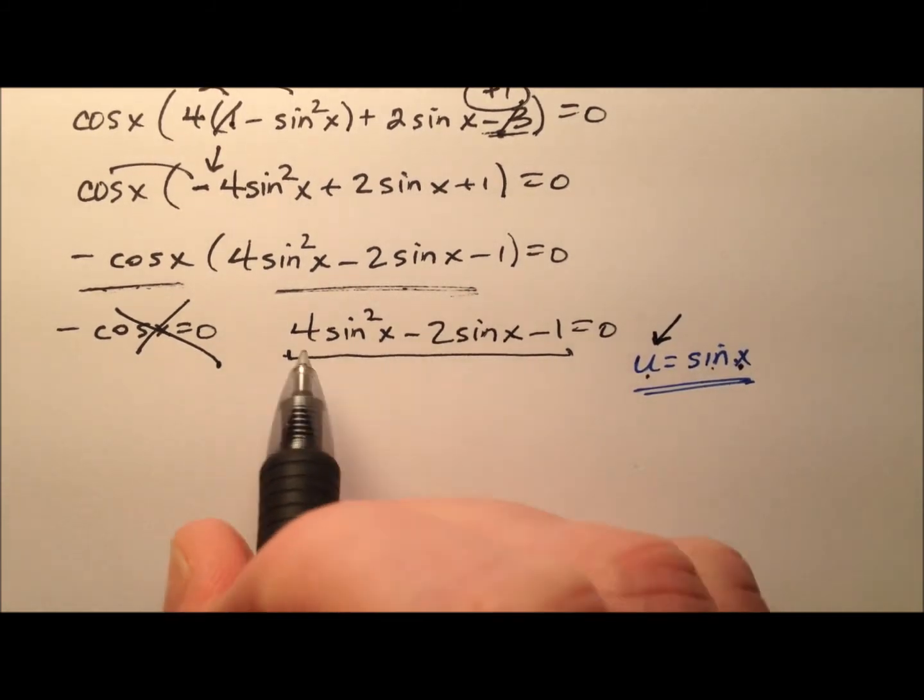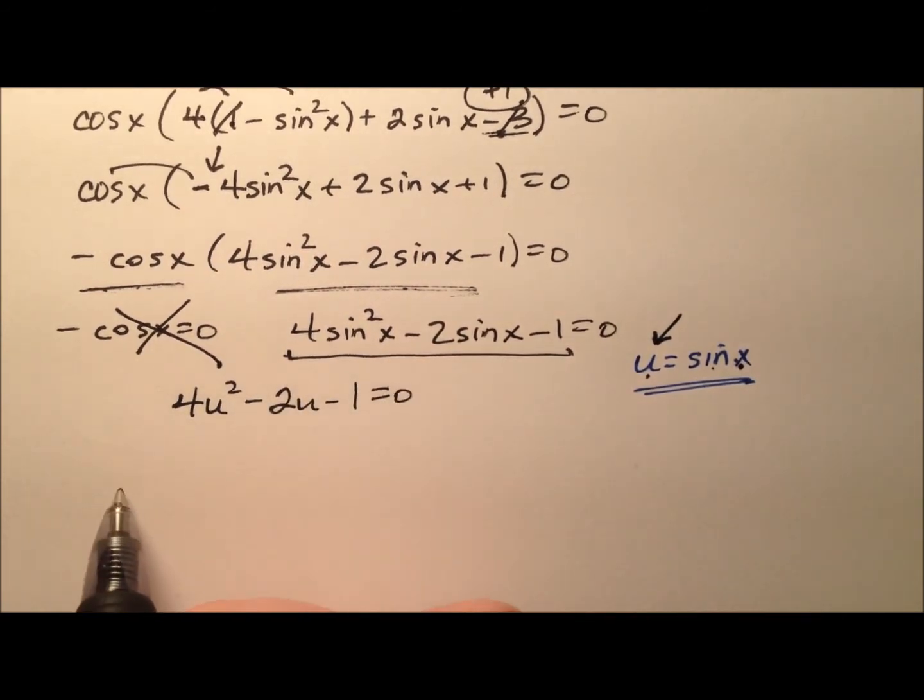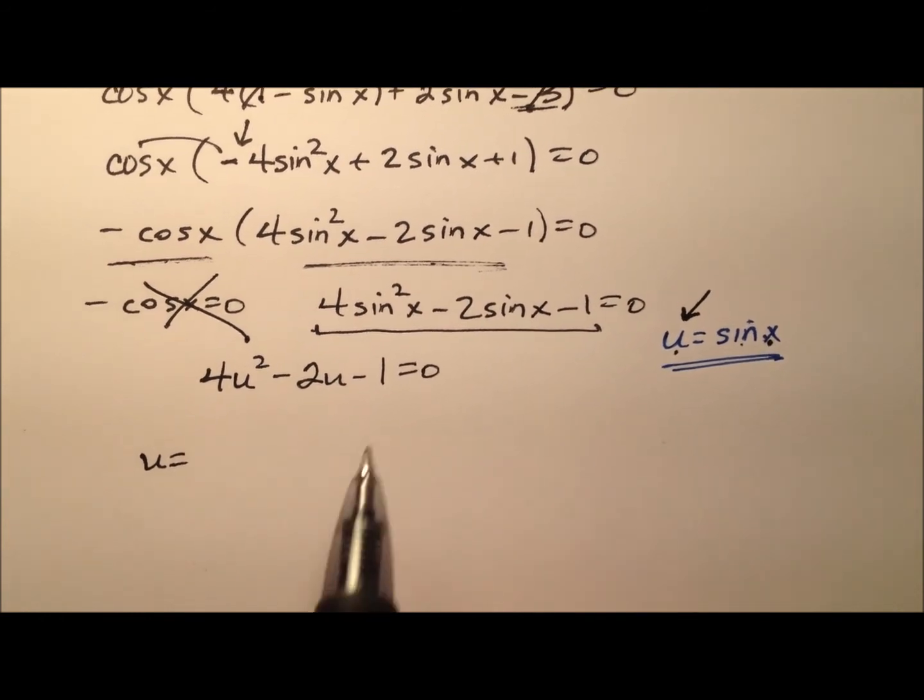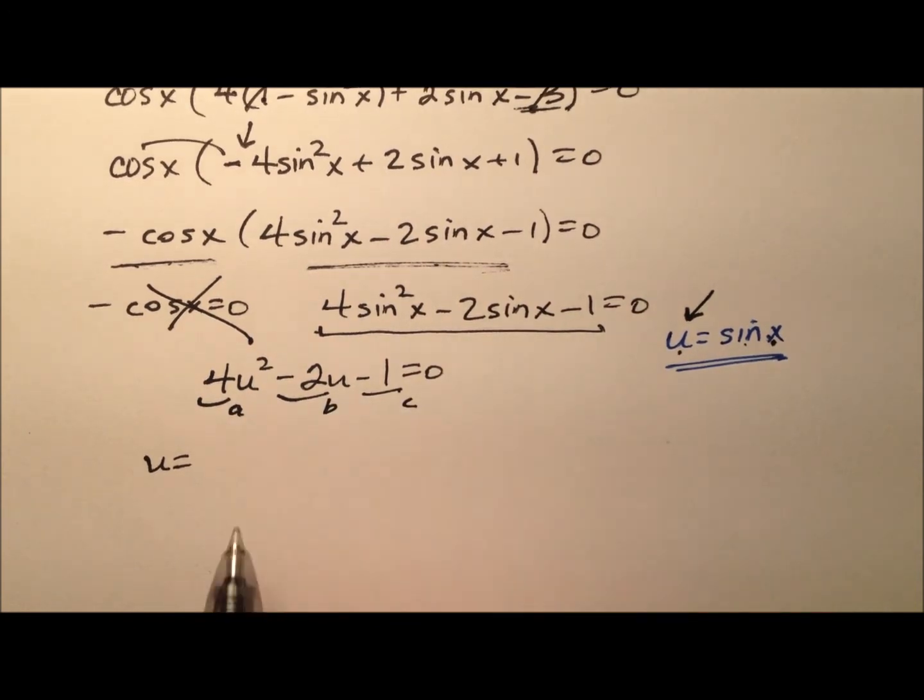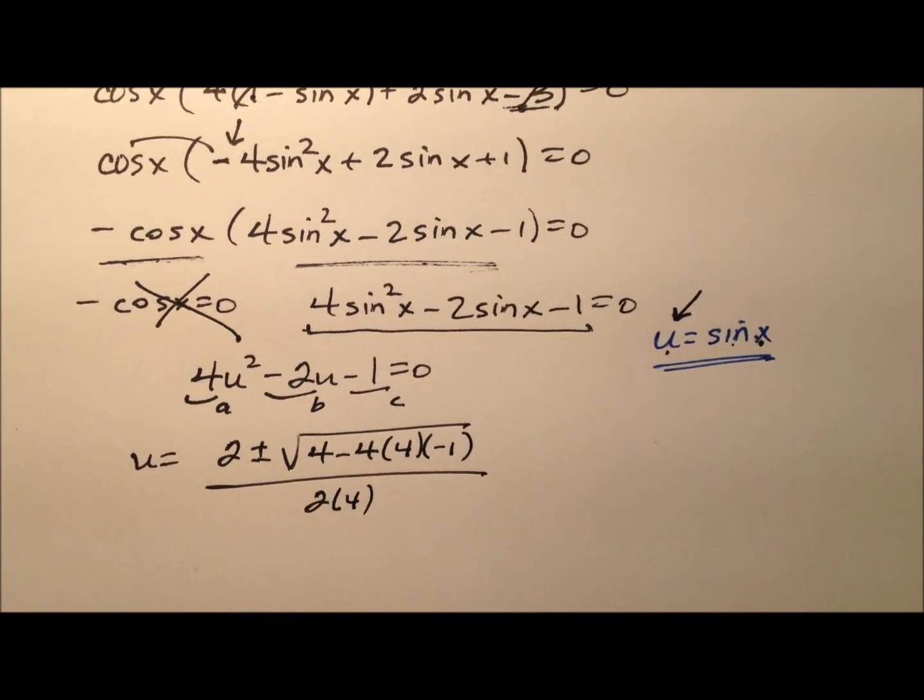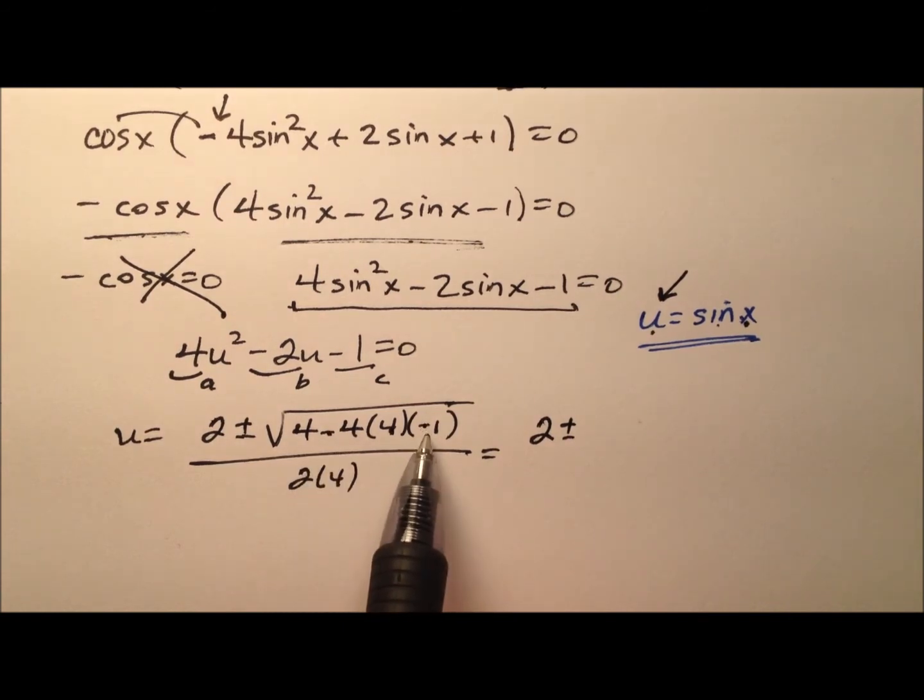Well since this is going to be quadratic in nature, after we make this substitution here, let's use our quadratic formula. So we have our values for a, b, and c. So it's going to be the opposite of b, so positive 2 plus or minus, and we have b squared, so 4 minus 4ac, all over twice a. So that's just a matter of substituting those values in. So we have 2 plus or minus. 4 times 4 is 16. The two negatives here make positive, so 4 plus 16 will be the square root of 20, all over 8.